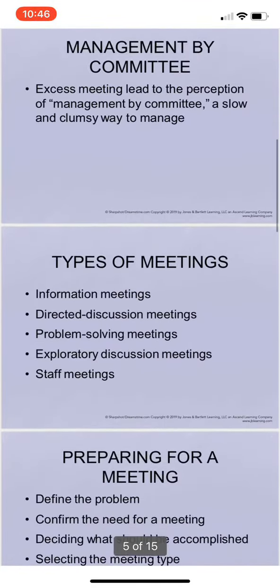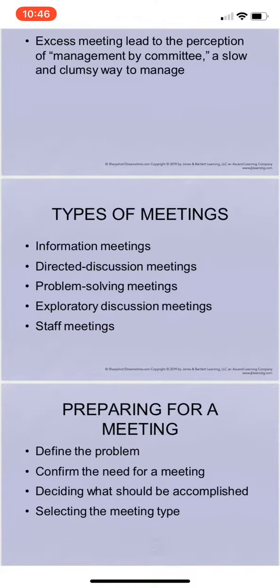Let's talk about the six different types of meetings. Information meetings are held simply for a transfer of information — you have something to pass along to others, and you choose to do this with a meeting rather than by some other means.